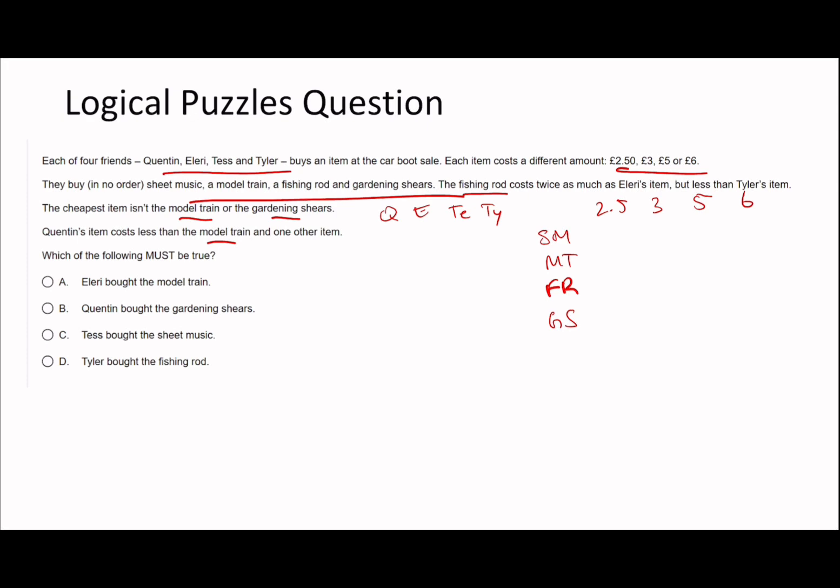The fishing rod costs twice as much as Ellery's item. Remember, it allows you to rule things out. If it costs twice as much as Ellery's item, it either costs £5 or £6. That means Ellery's item doesn't cost £5 or £6. But it says fishing rod costs twice as much as Ellery's item but less than Tyler's, so it can't be the most expensive - it's going to be £5. Therefore Tyler's is going to be the one that's £6.